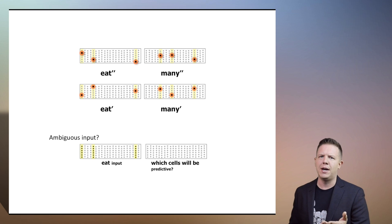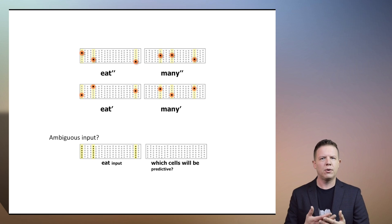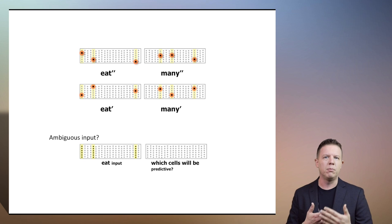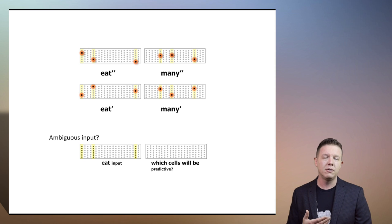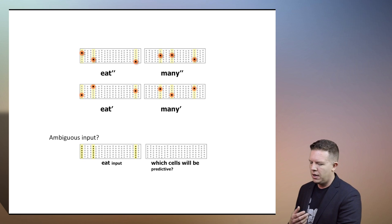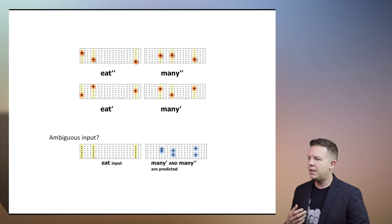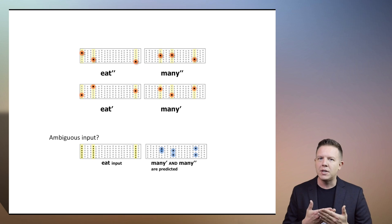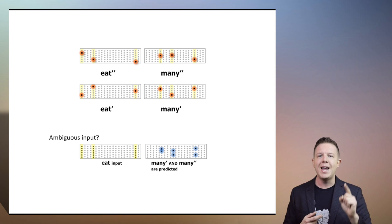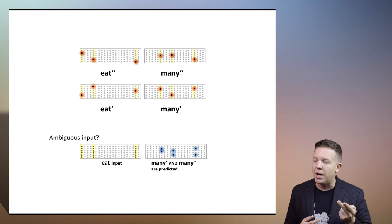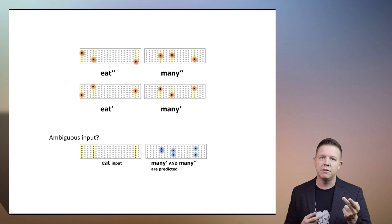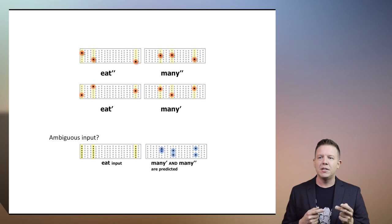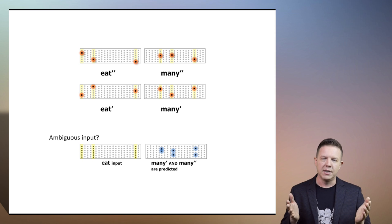What cells do you think are going to become predictive if we don't have a context for eat? It turns out that all the active cells for both many prime and many double prime become predictive because we don't know the context of eat.